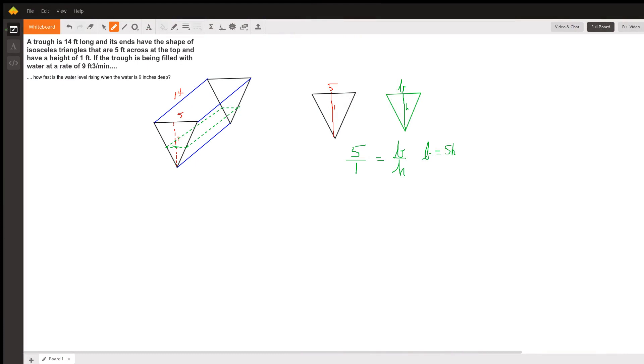Okay, these diagrams depict the situation that's described here. We've got this trough that has bases that are isosceles triangles with a base that is five feet long and